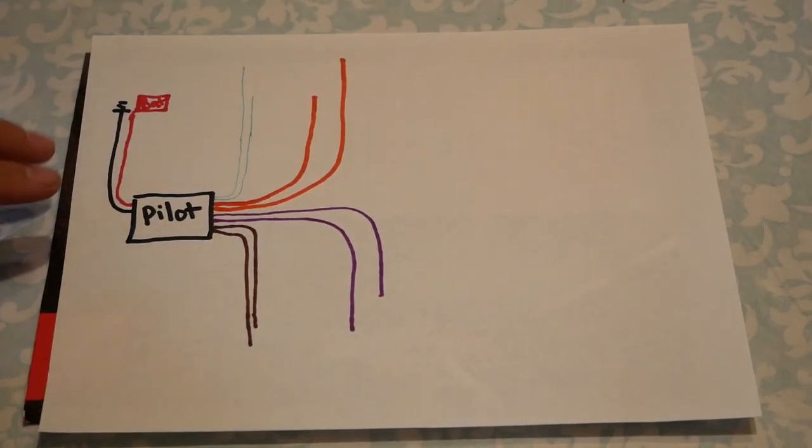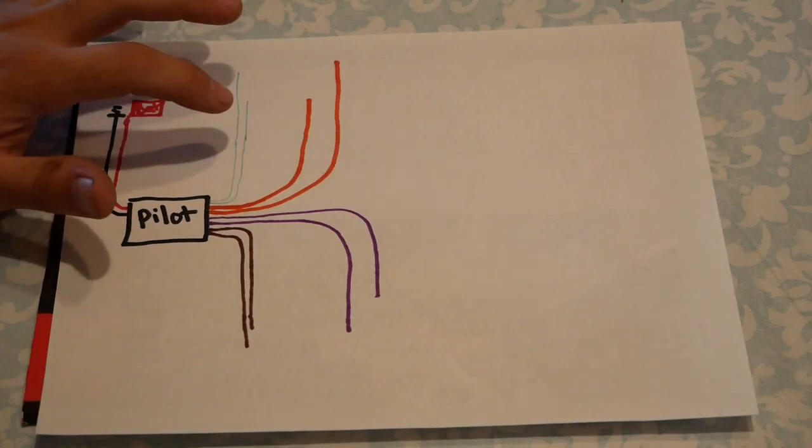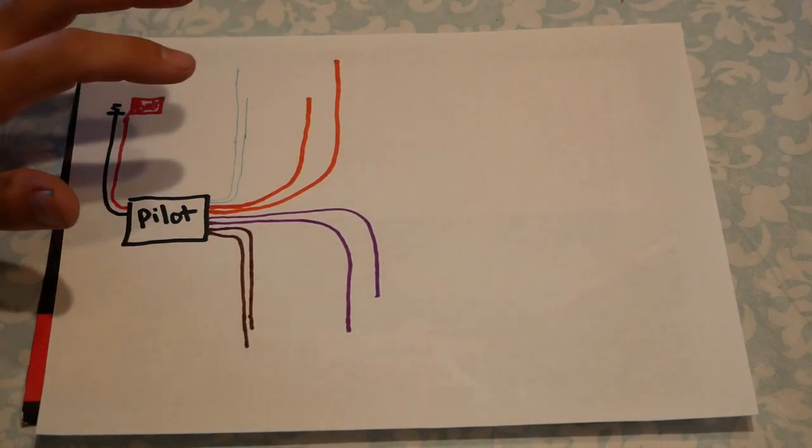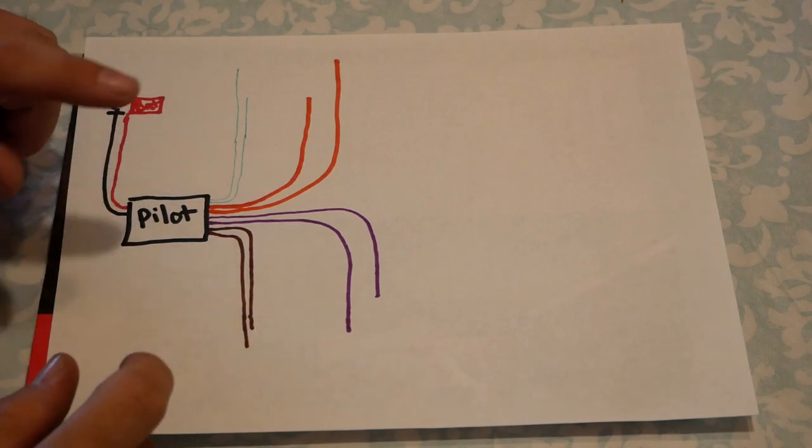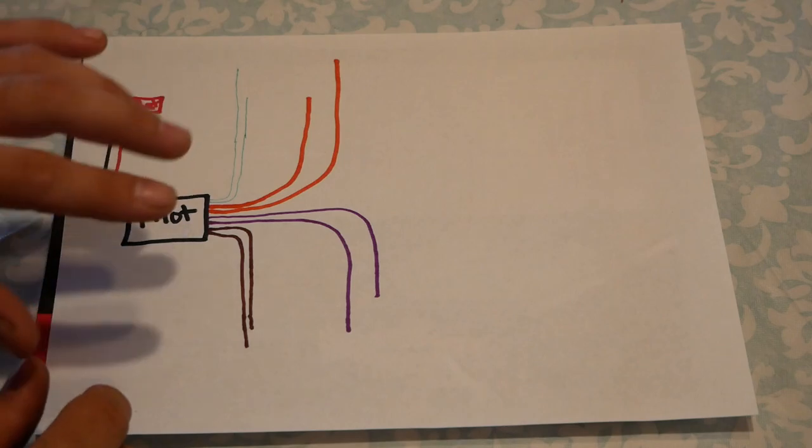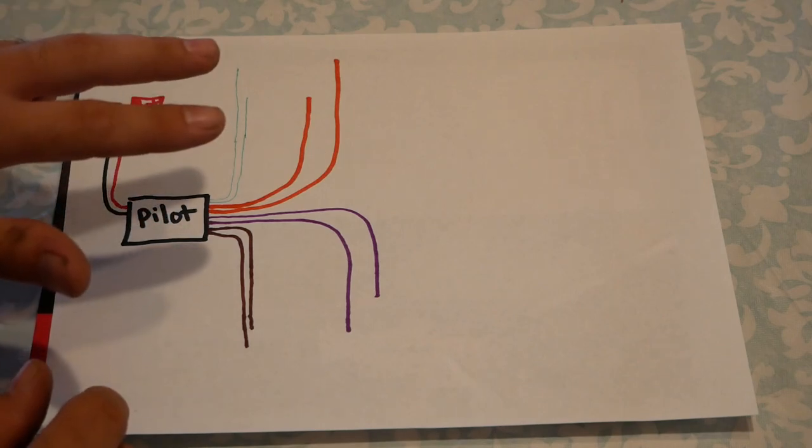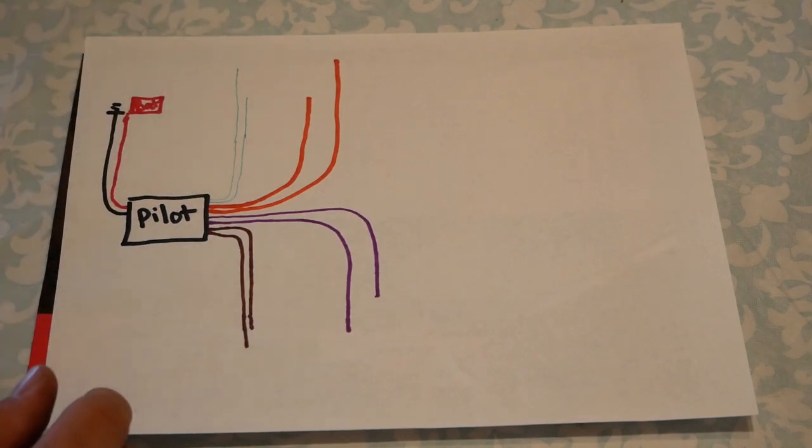All right, so here's a simple diagram of the pilot box that you're going to receive. It has four outputs. If I remember correctly, because I installed this a year ago, you're going to have green, a blue, a tan, and maybe a gray. But either way, there's going to be eight wires coming out, two for each channel. So the four channels, eight wires.